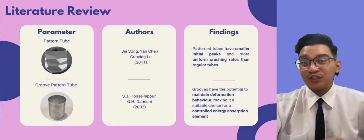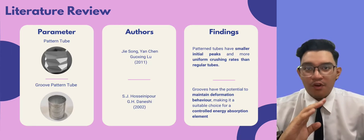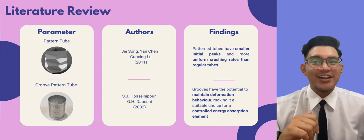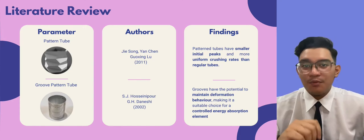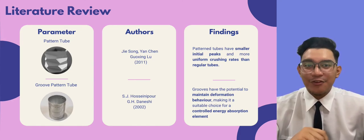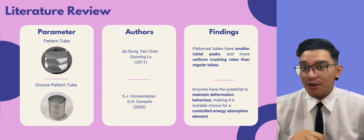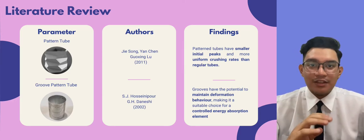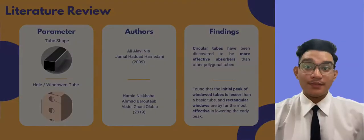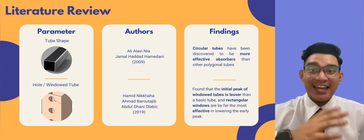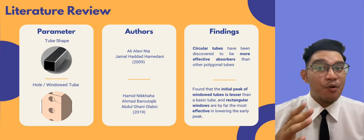Next, we move to the literature review. Many previous studies have been conducted related to Thinwall Tube topics, using different parameters to achieve good crashing performance. Ji Song et al. used a patterned tube and found that it has smaller initial peaks and more uniform crashing rates than a regular tube. Hosinepour et al. used a groove pattern on a tube, and the result showed that the groove has the potential to maintain deformation behavior, making it a suitable choice for a controlled energy absorption element. Various shapes of tubes were also studied by Ali et al., who found that circular tubes are more effective absorbers than other polygonal tubes.